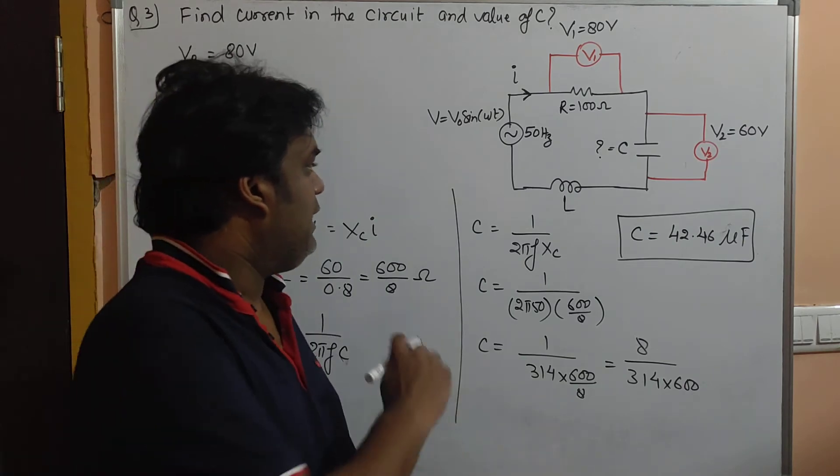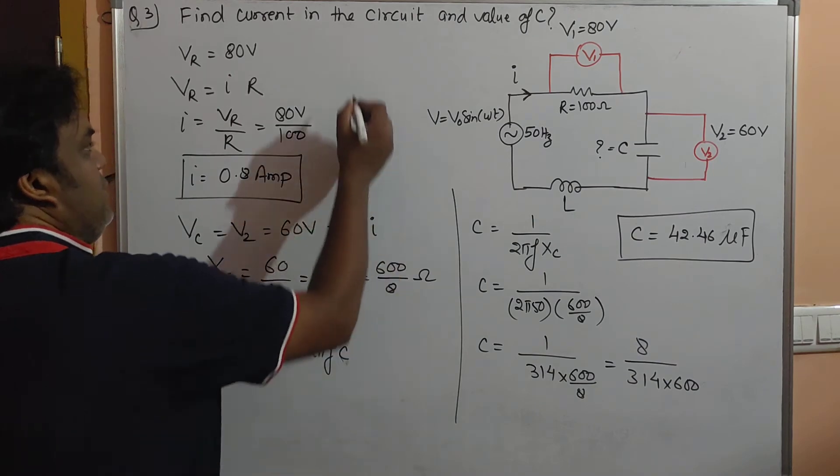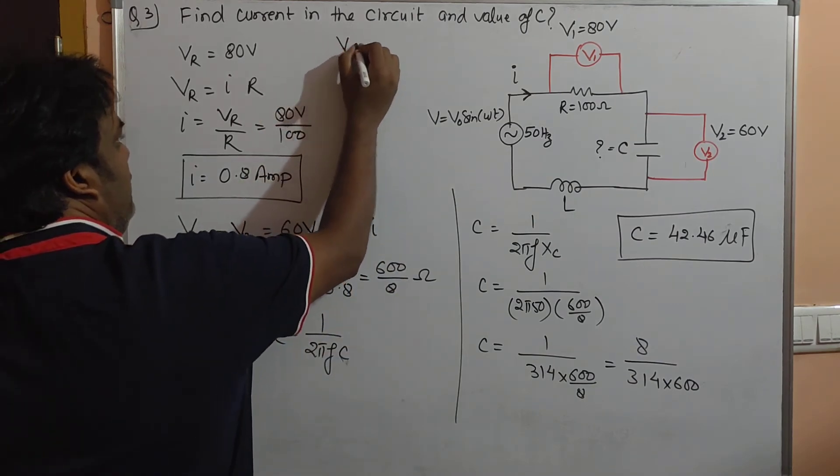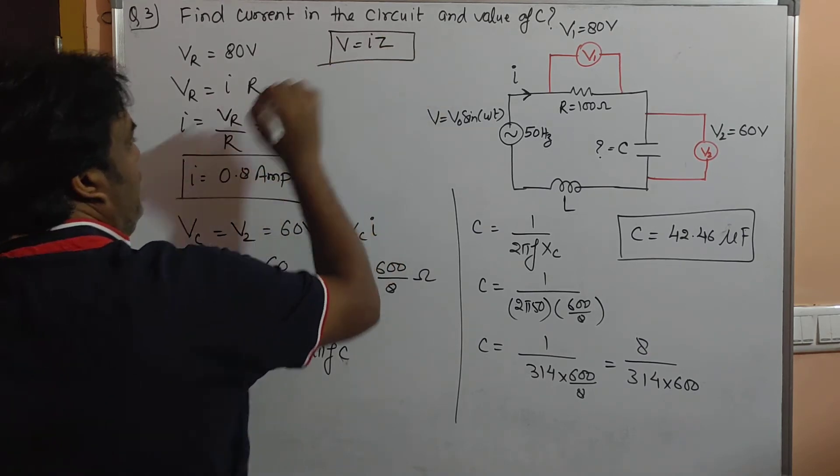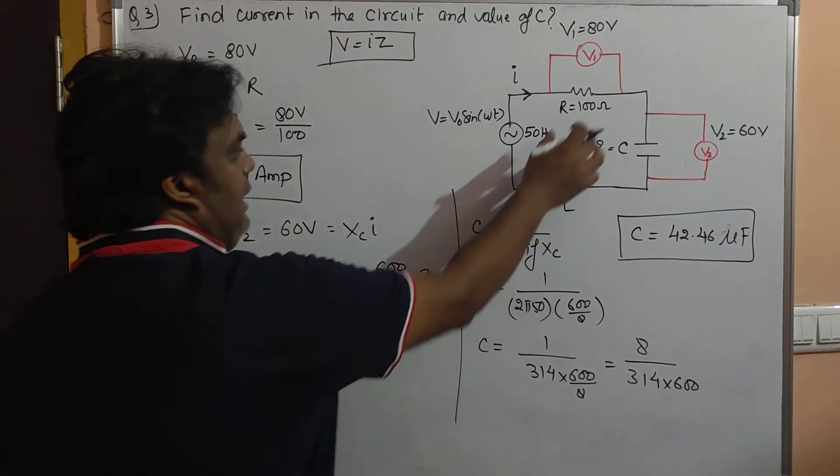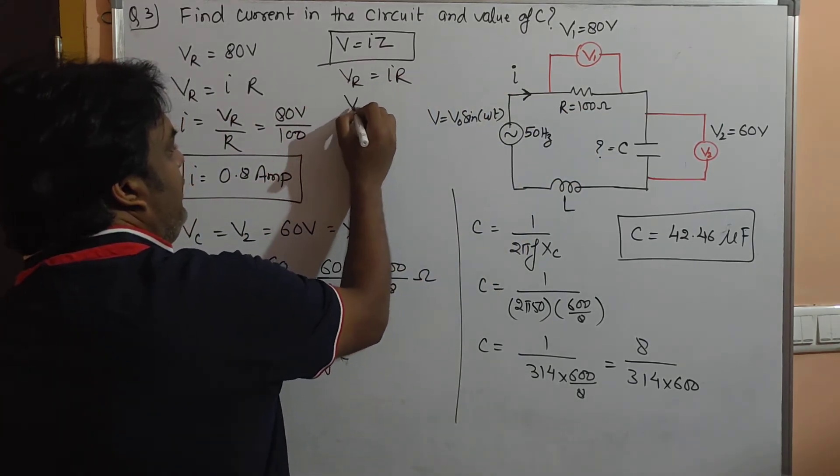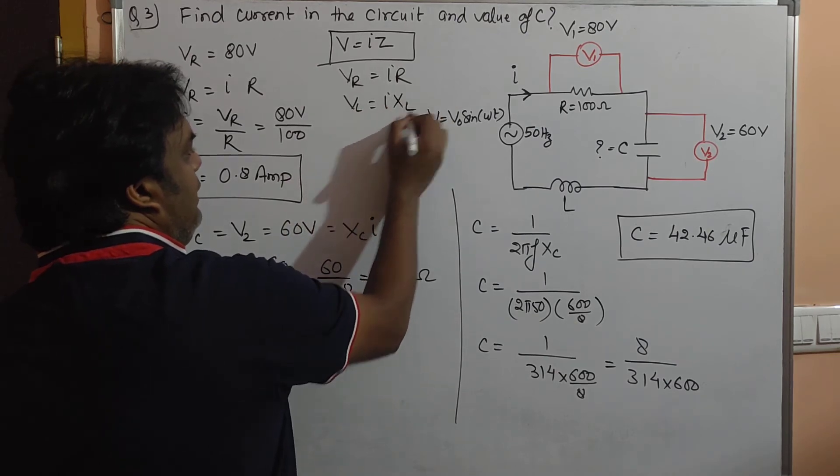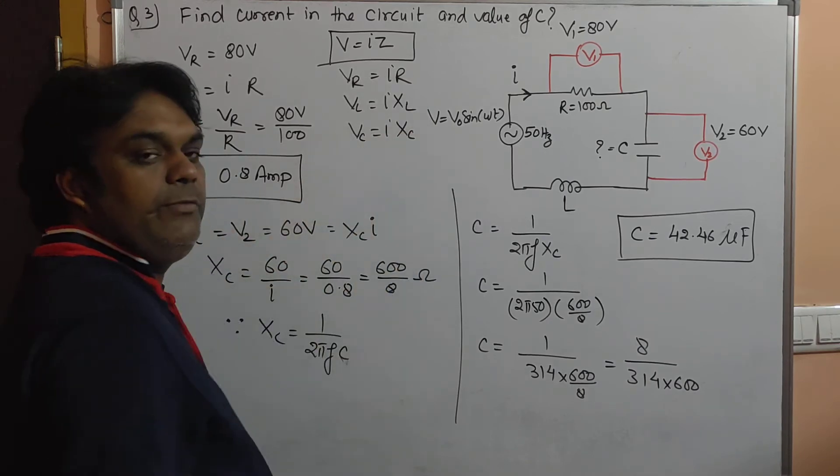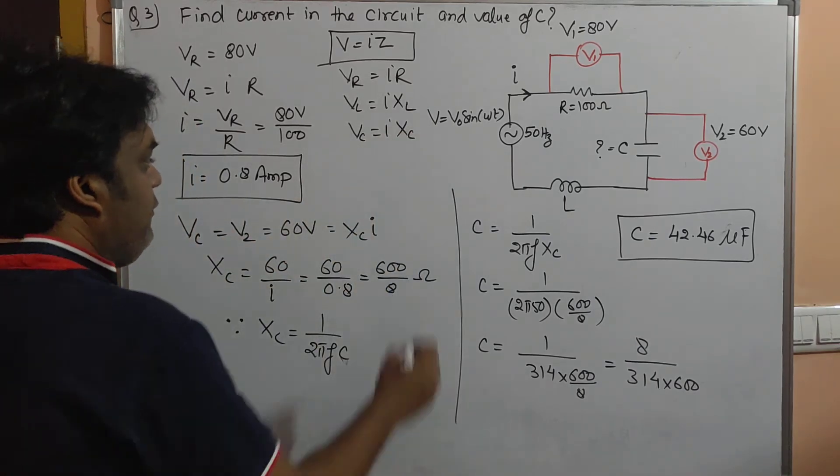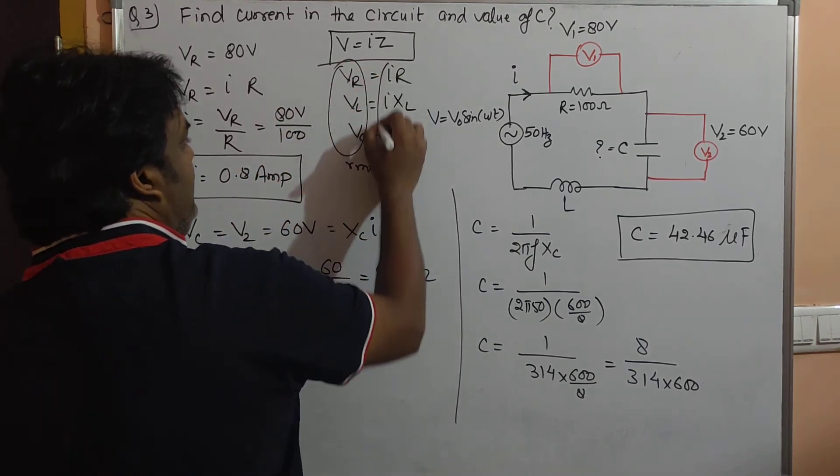Basically, what we need to do for all these numericals is remember that V equals I into Z. If it is R, then Z is replaced by R for Vᵣ. If it is Vₗ, then Z is replaced by Xₗ. If it is Vc, then Z is replaced by Xc. This is what we are using.